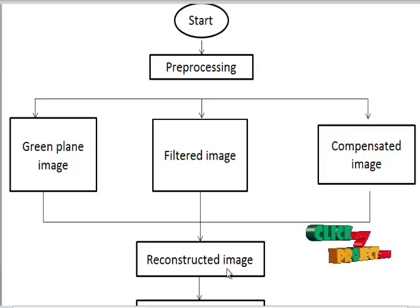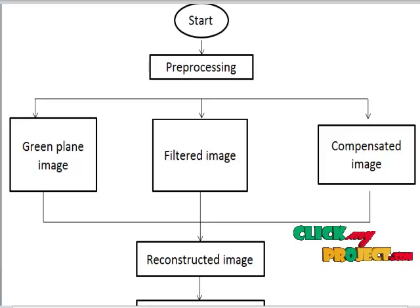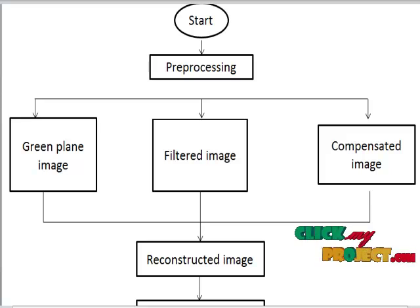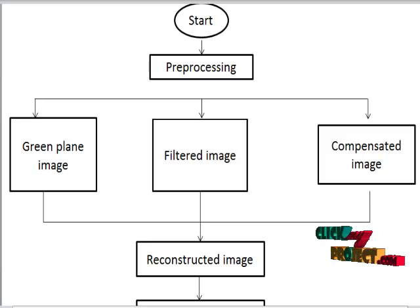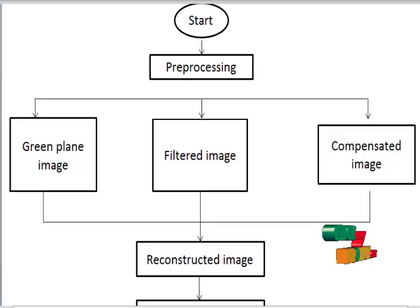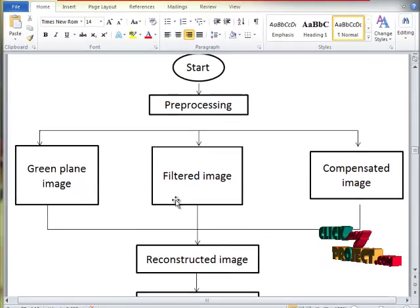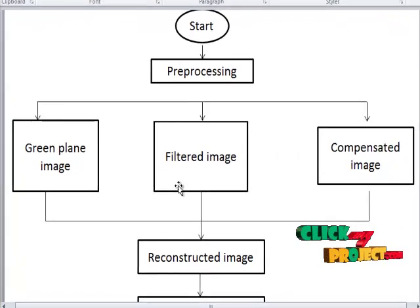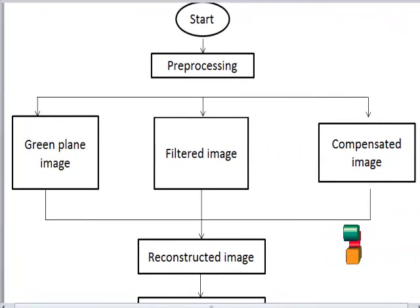We get the compensated image by normalizing the green image. Then in the reconstructed image, after the preprocessing method, we get the opened image. The transformed image is obtained by the difference between the input image and the opened image. The transformed image is then reconstructed by geodesic dilation. The geodesic dilation involves two images: a marker and mask image.